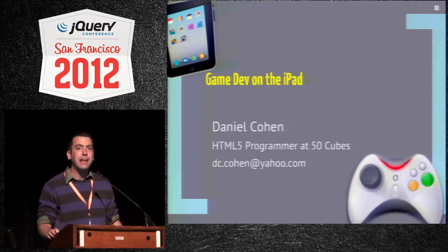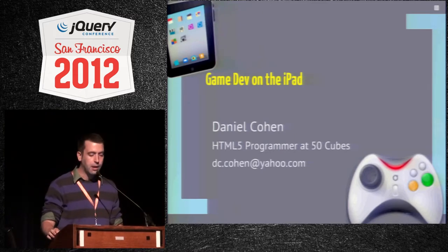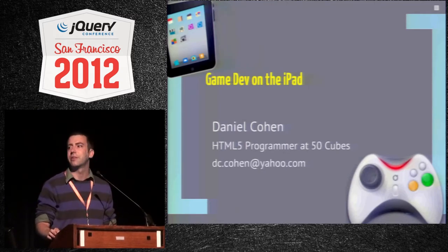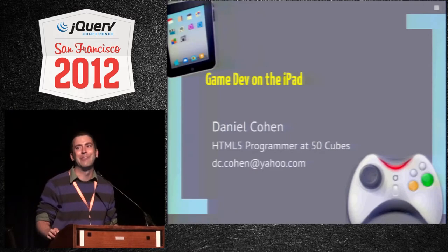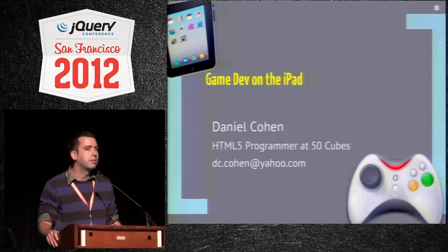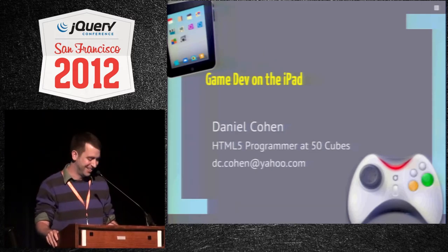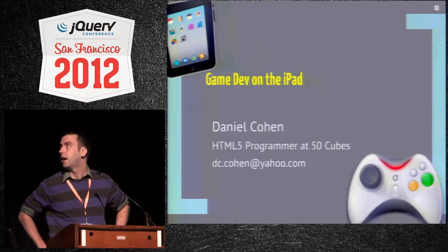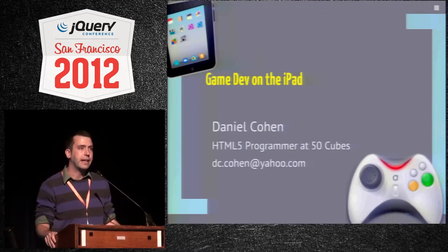My name is Daniel Cohen, I work here in San Francisco for 50 Cubes. We are a company that makes primarily social games targeted towards women. What I'm here to talk about is we just made this game called Fashion Tale — it's in the App Store right now. It was developed in jQuery; the front end is entirely in jQuery and HTML5, and it took us about eight months or so to put together.